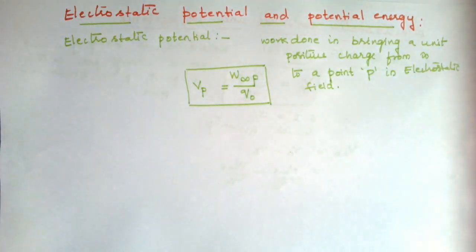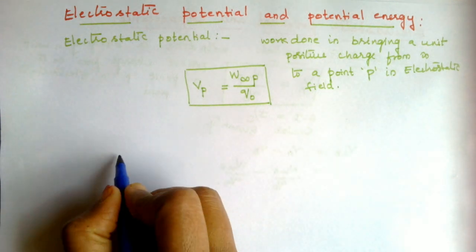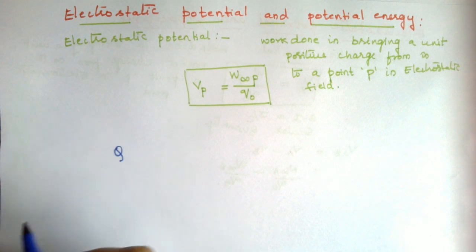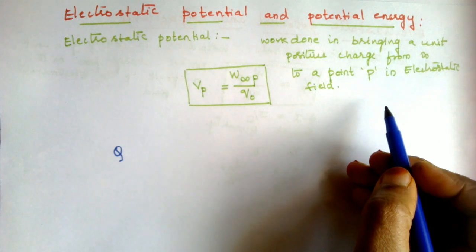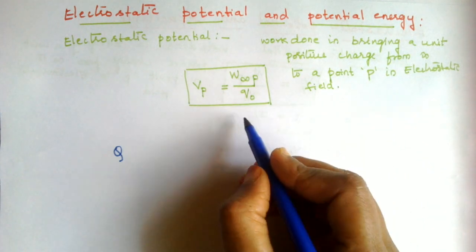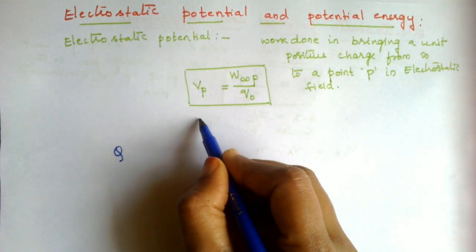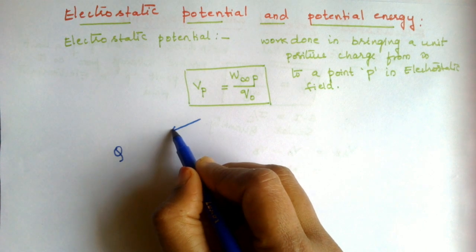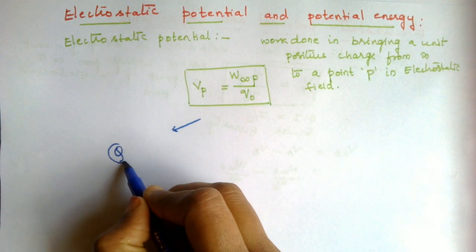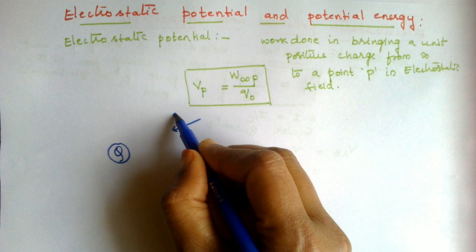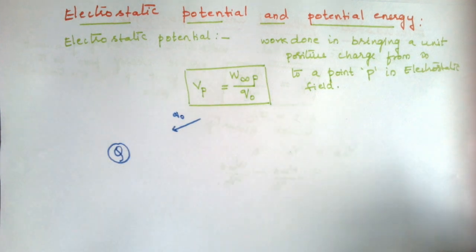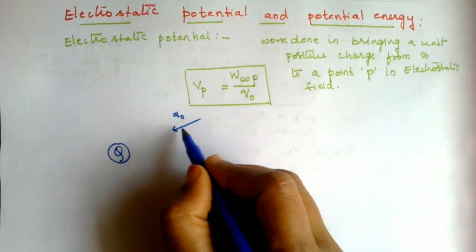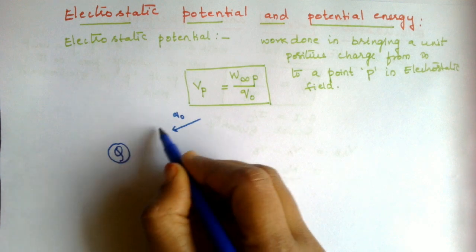Now let us see why it is necessary to do work in bringing a charge from infinity to P. Suppose we have a source charge Q in free space and we bring a unit positive charge from infinity. As you approach this charge you are entering the electric field produced by this source charge. The test charge is positive with magnitude Q₀, so there will be a force of repulsion between them.